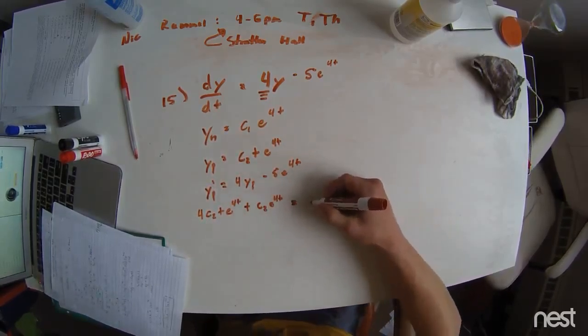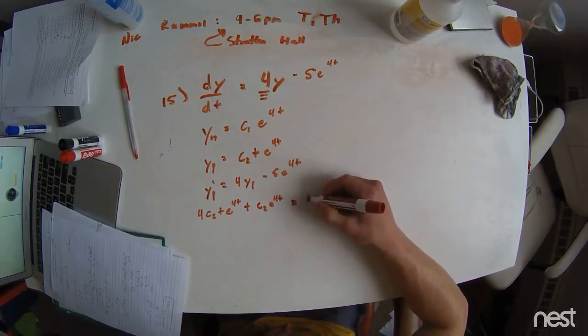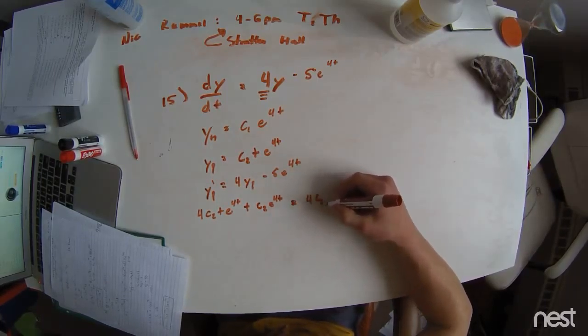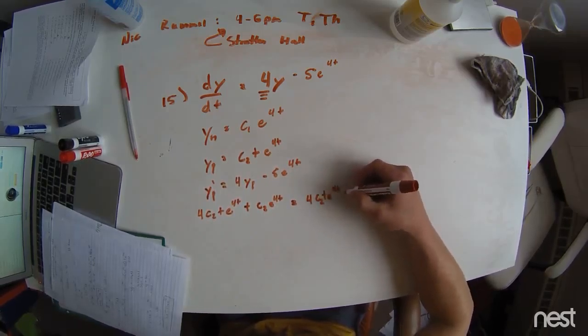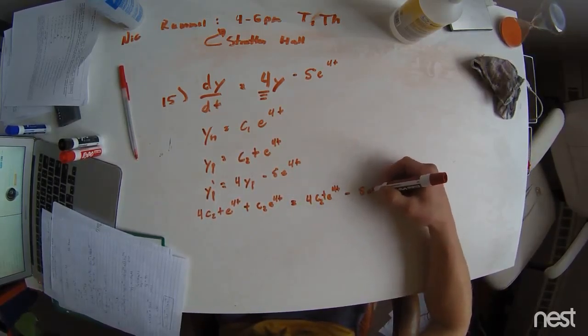And now this equals 4 times C2e to the, which is t there, e to the 4t, minus 5e to the 4t.